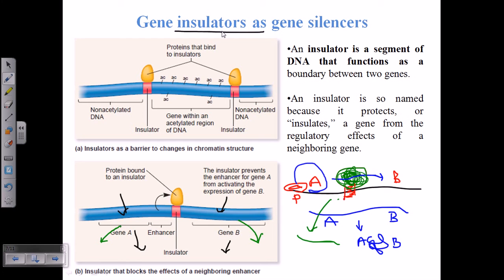We are going to see an important effect of this gene insulator in controlling the expression of a few genes which must come from our father and also the expression of a few genes which must come from our mother. This process is called genomic imprinting.